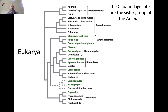Here's our phylogeny of the Eukarya once again. What we want to point out now is that the sister group of the animals is the choanoflagellates. The animals, the choanoflagellates, and the fungi together make up the supergroup opisthoconts. In order to understand what animals are, let's spend a few minutes exploring these weirdos called the choanoflagellates.